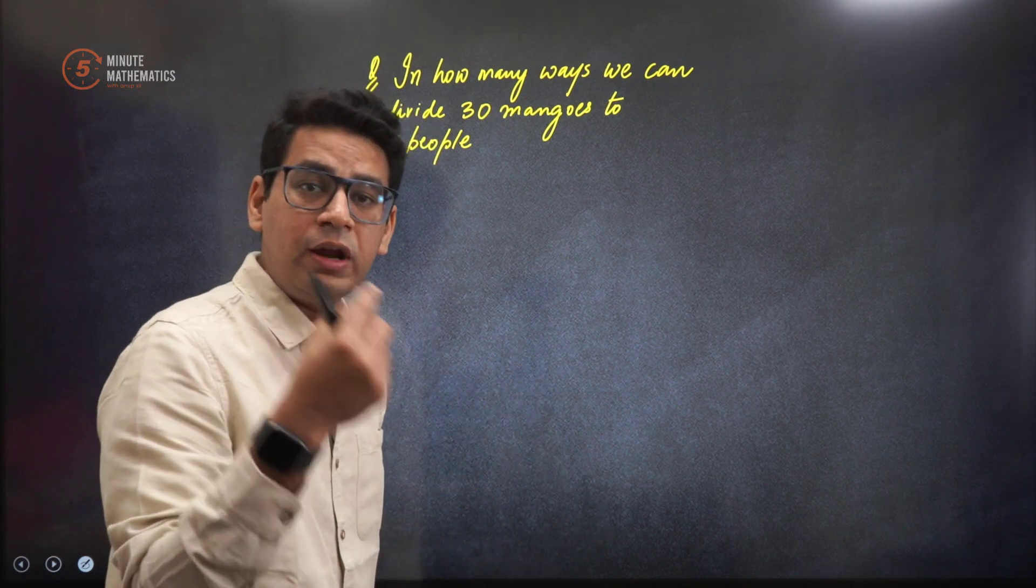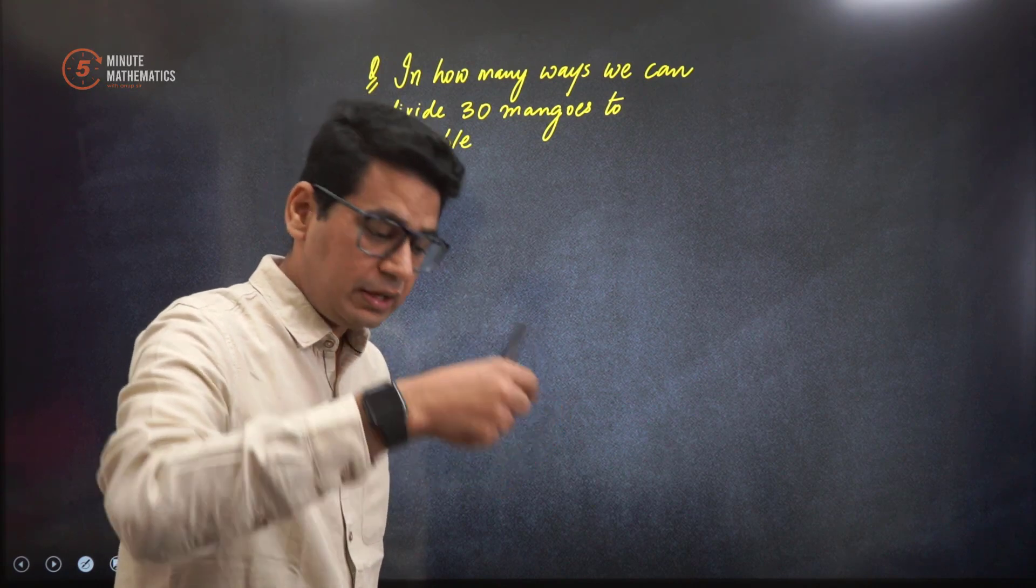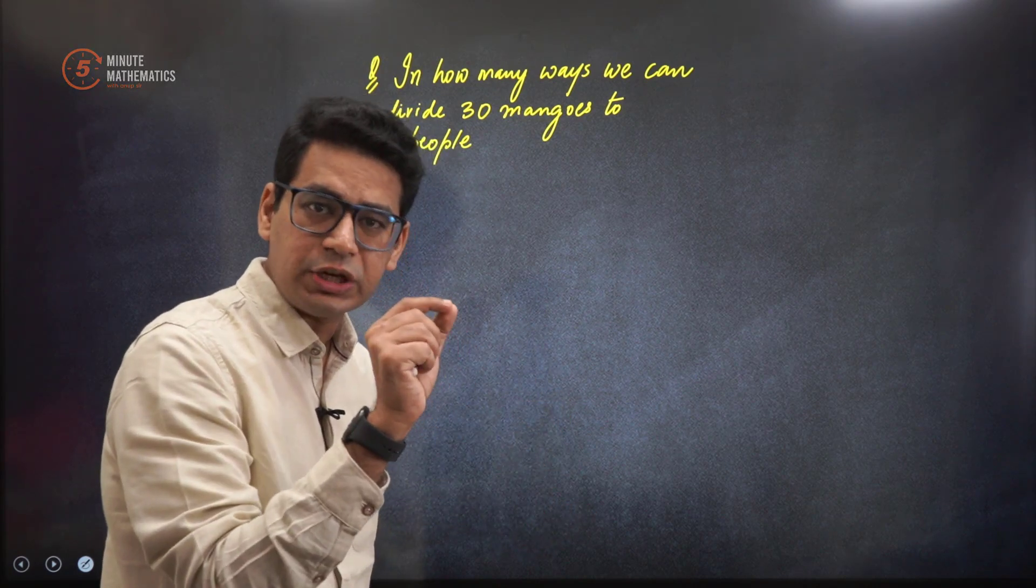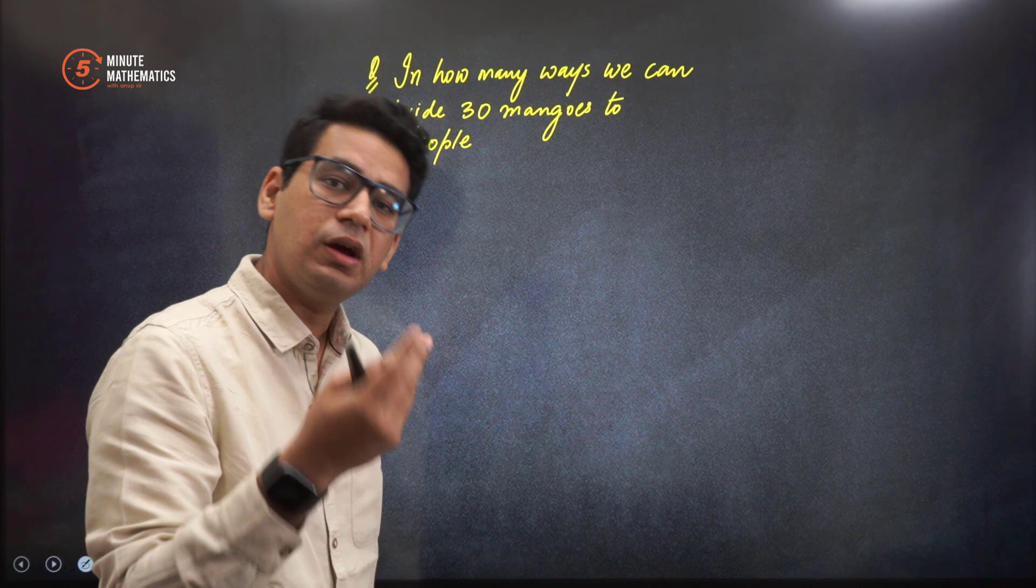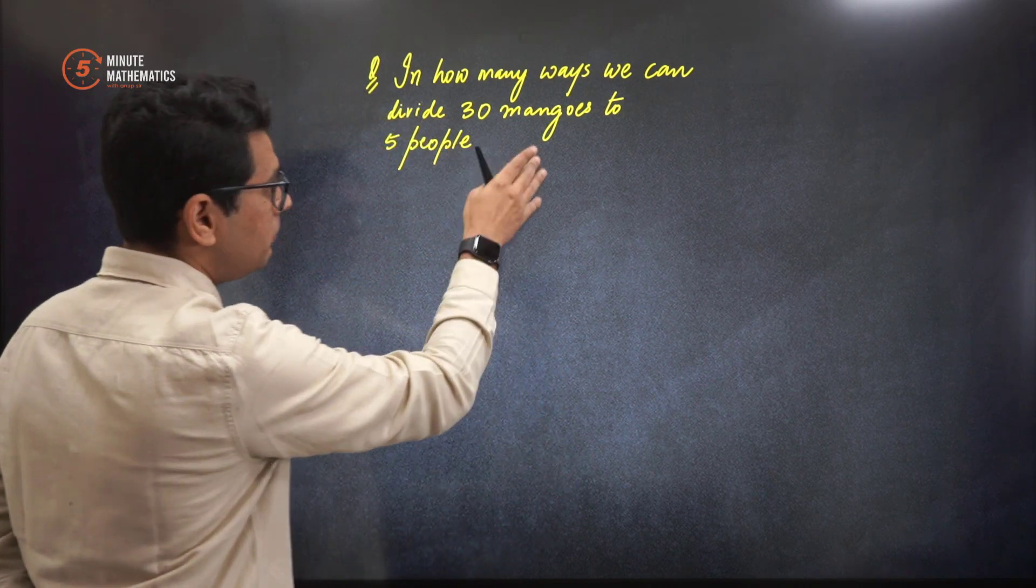30 mangoes—mangoes are all identical when we say because they are all eventually mangoes. Similarly, a 1 rupee coin, whatever it might be, a very hard pressed coin which has some shade over it, it will always be a 1 rupee coin. So in that way, 30 mangoes are identical.